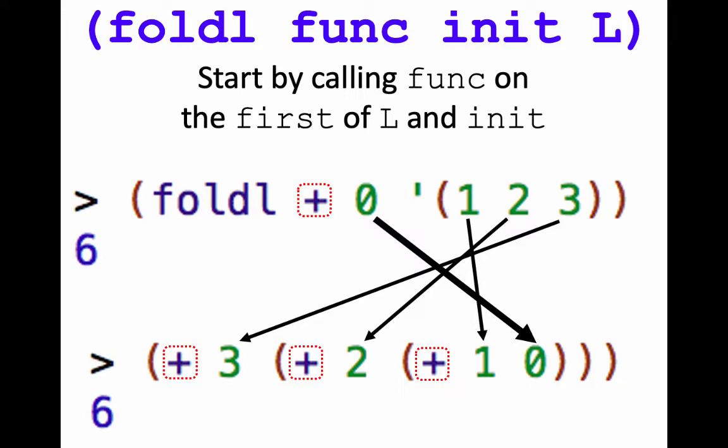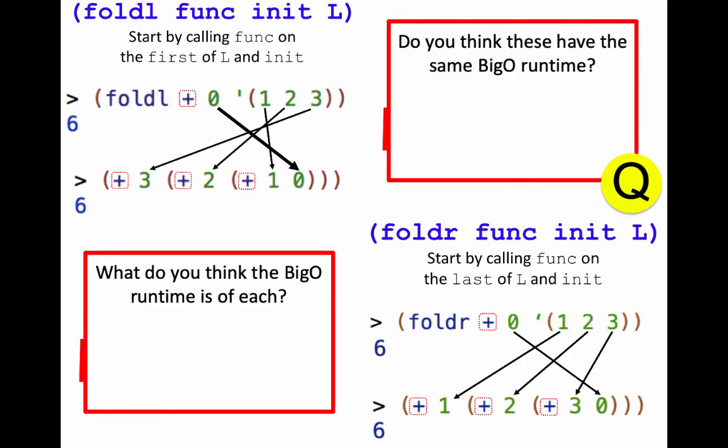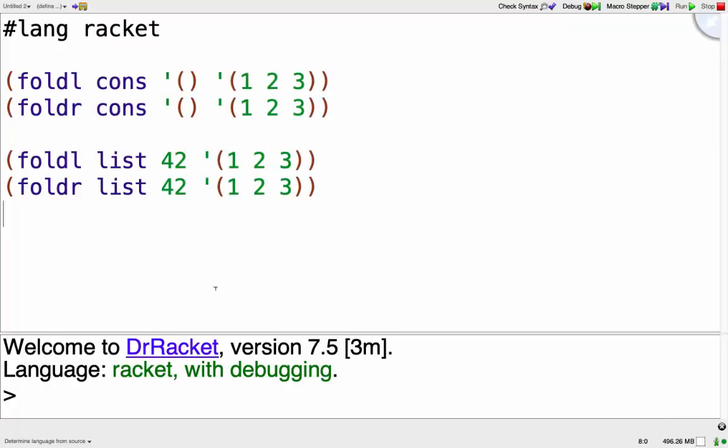And again, it doesn't matter for plus, but it will matter for some other things. So I want you to pause here and think about if these two things are likely to have the same Big O runtime and what you think the Big O runtime of each would be. And you can pause, but I'll keep going. Okay, popping over to Racket, I want you to try and predict what the output would be of each of these calls.